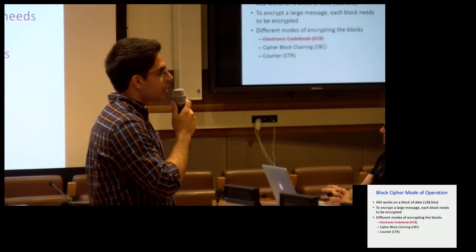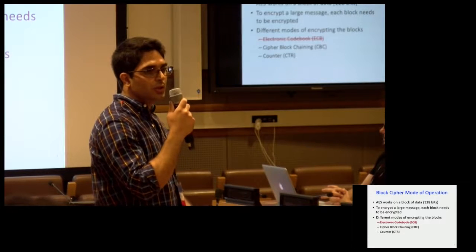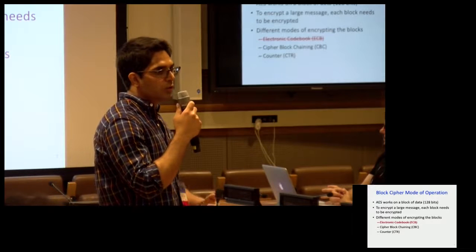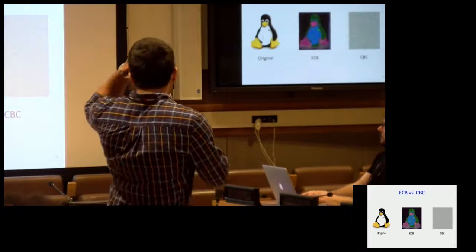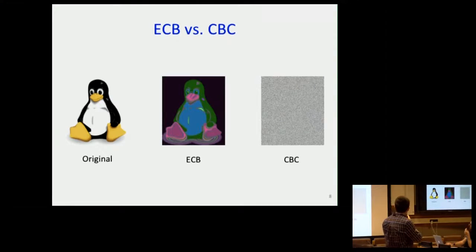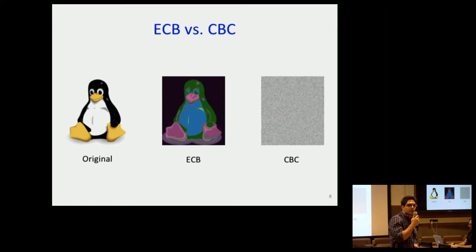CBC and CTR are both secure. CTR, or counter mode, has more functionality — you can do parallel encryption and decryption, so it's going to be faster and you don't need to go sequentially. To give you a graphical representation of the difference between ECB and CBC: if you encrypt a Tux Linux image using ECB, after encryption you're still going to see the patterns in your data — it's broken. But if you use something like CBC or CTR, it completely gets rid of the patterns and looks completely random. That's why you should never use ECB.